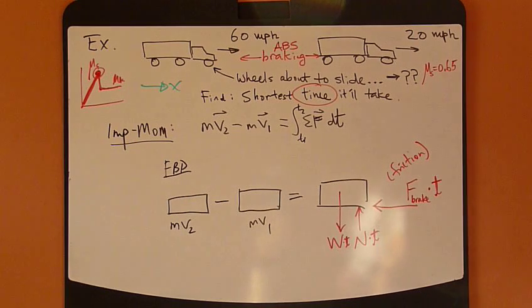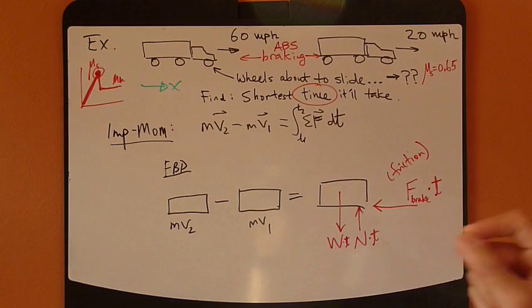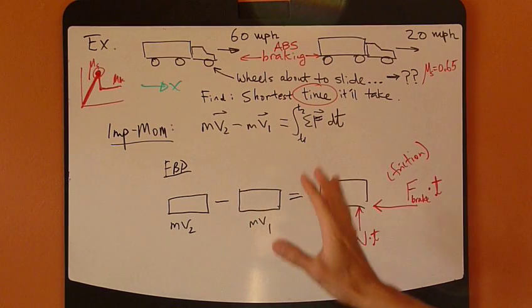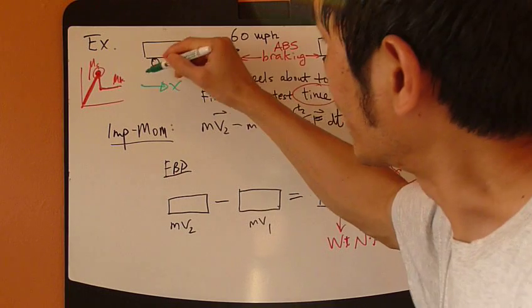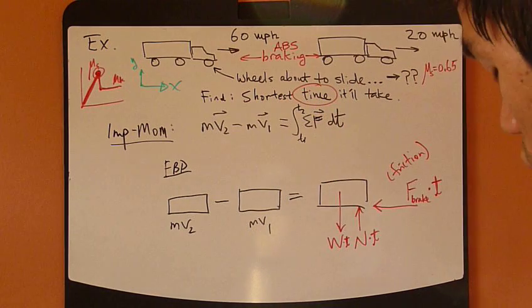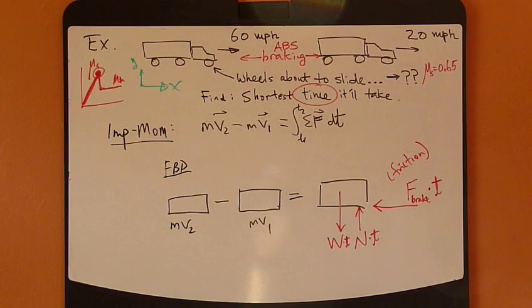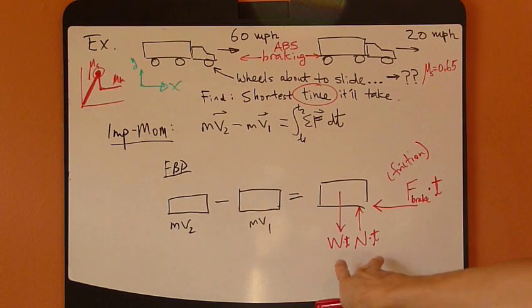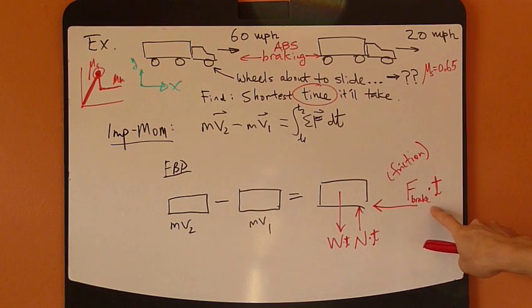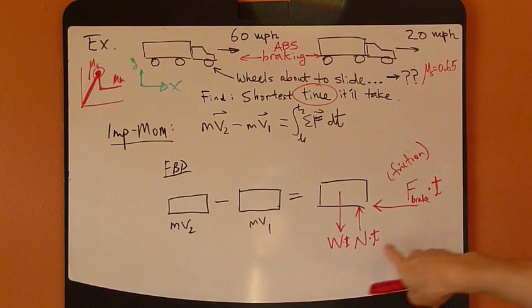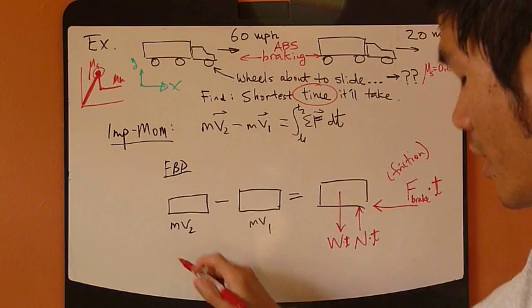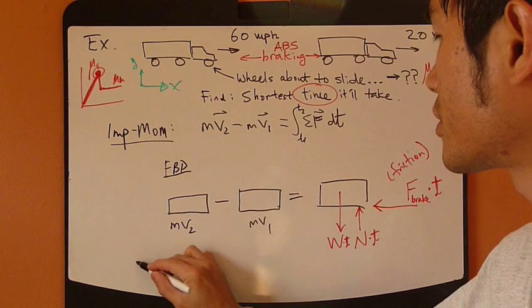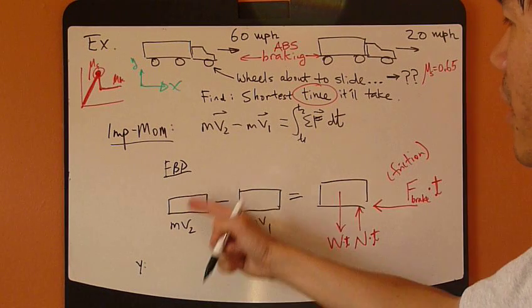Keep in mind that this impulse momentum equation is a vector equation, so we need to apply this into the principal direction. I have X. Now I can define vertical as Y direction too. I have two vertical forces and one horizontal force. So let's apply this impulse momentum equation in the vertical direction first. Let's see what happens, the Y component.